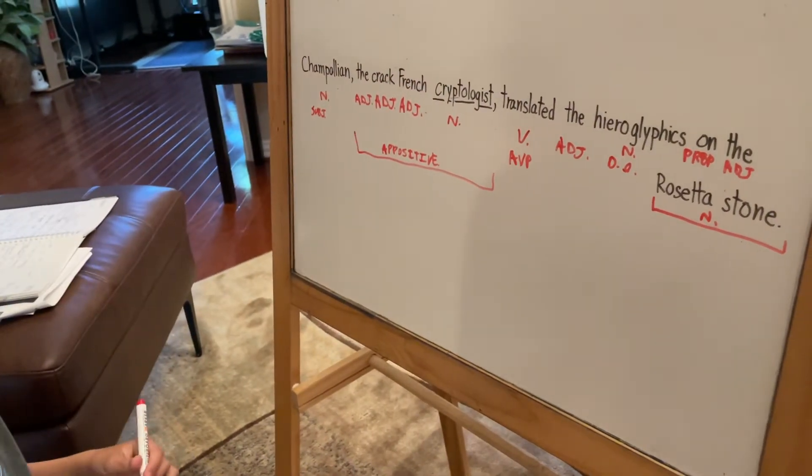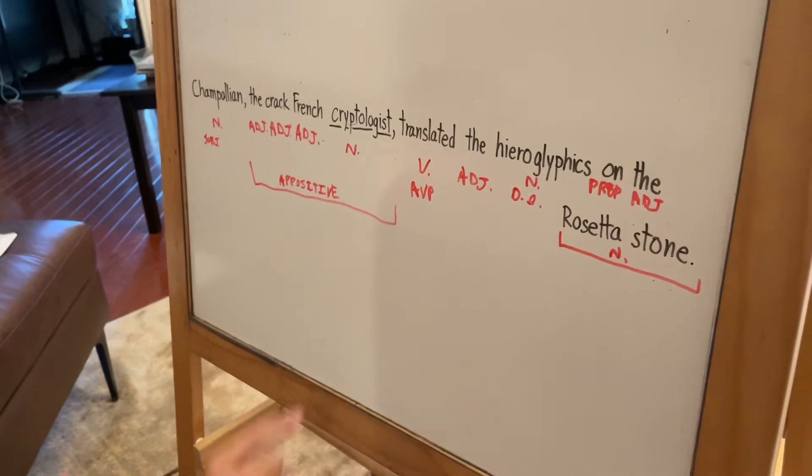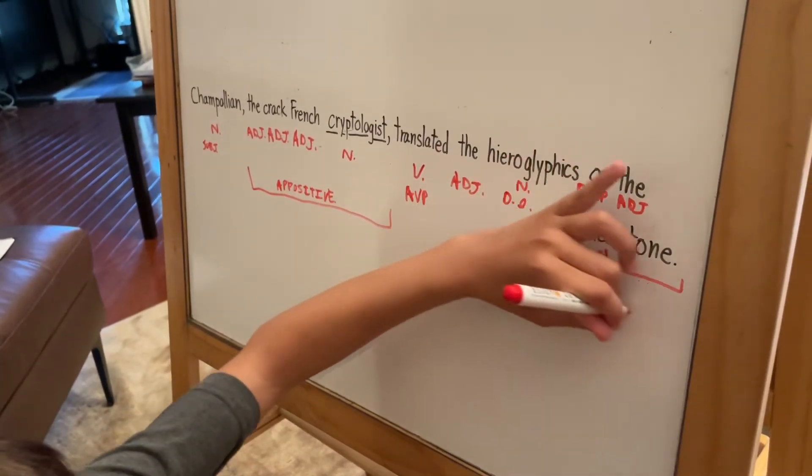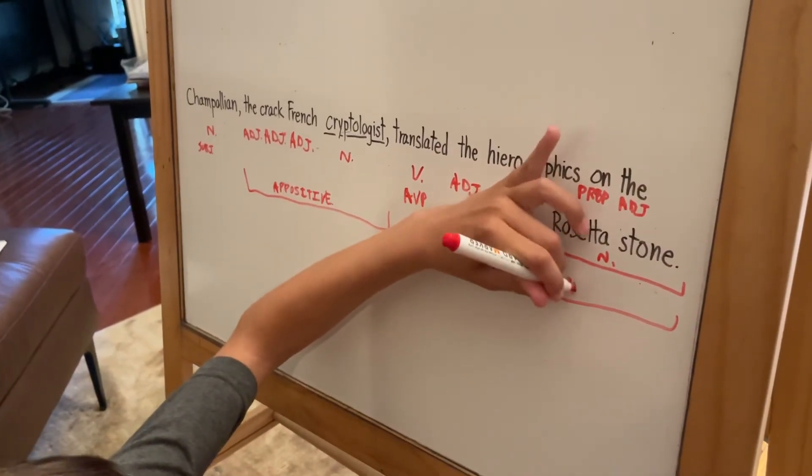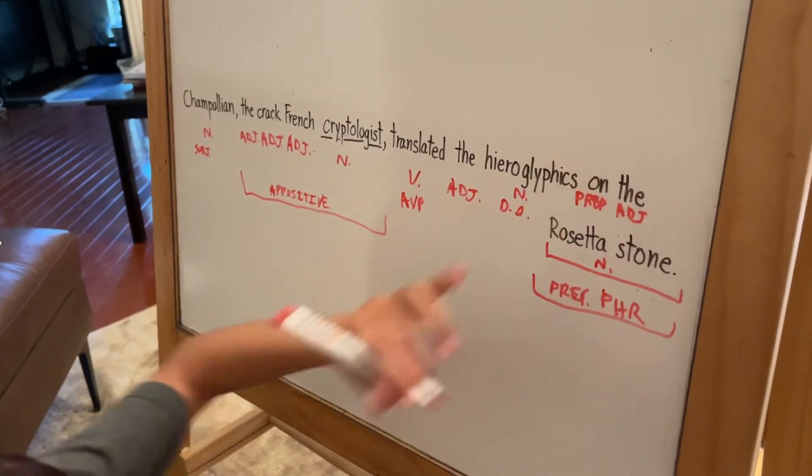Our second phrase today is 'on the Rosetta Stone' because we have a preposition, an adjective, and a noun. Usually prepositional phrases consist of three words.